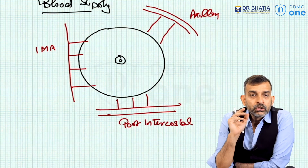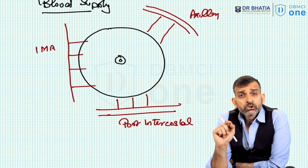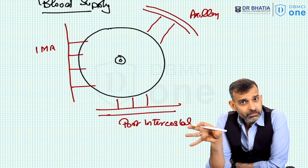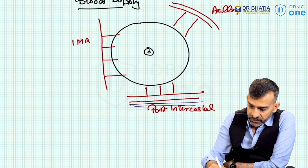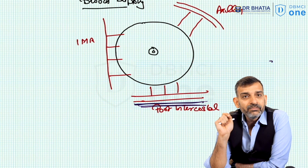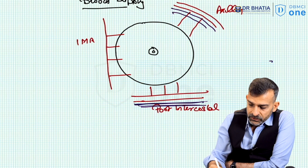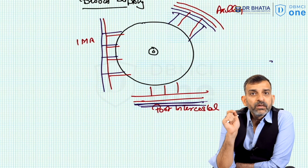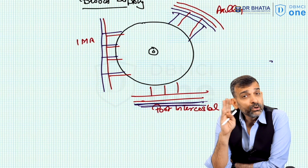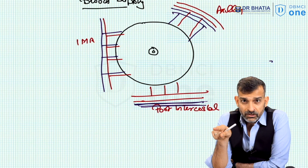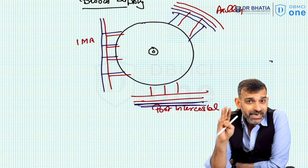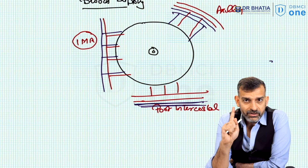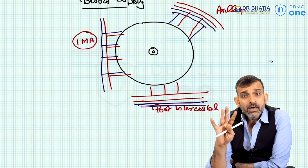Since veins run parallel to arteries, there are corresponding veins draining the breast: the posterior intercostal vein, the axillary vein and its tributaries, and the internal mammary vein and its tributaries. A common exam question is: out of the three supplying vessels, which mainly contributes to breast blood supply? The main contribution comes from the internal mammary artery and its branches.